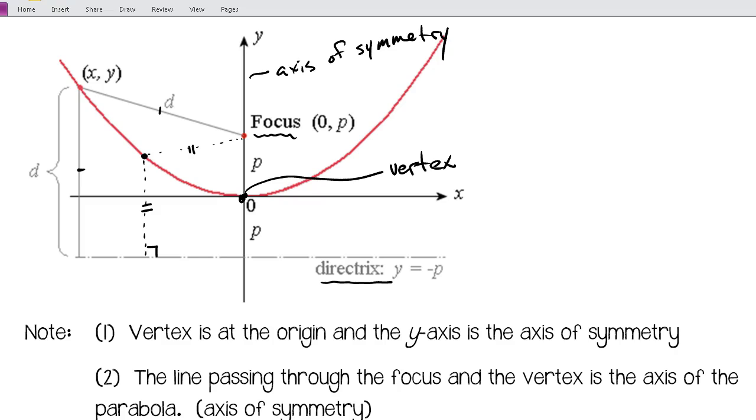We can turn it sideways and we're still going to have the same parts. Our directrix will just be vertical, and our axis of symmetry would be horizontal.